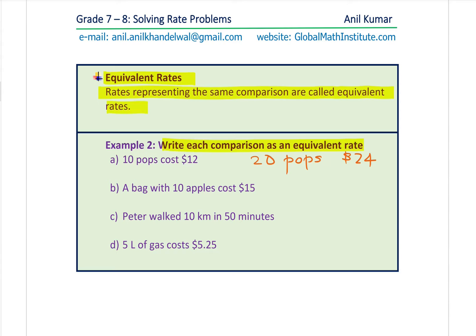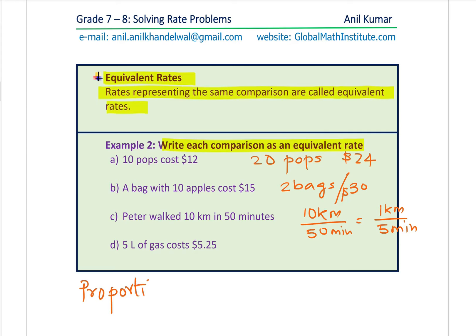A bag of 10 apples costs $15 — so 2 bags for $30. That becomes an equivalent rate. Peter walked 10 kilometers in 50 minutes — we could write this as 1 kilometer in 5 minutes. You can see how easily we found the equivalent rate. You can have a proportion or scale factor to get equivalent rates.